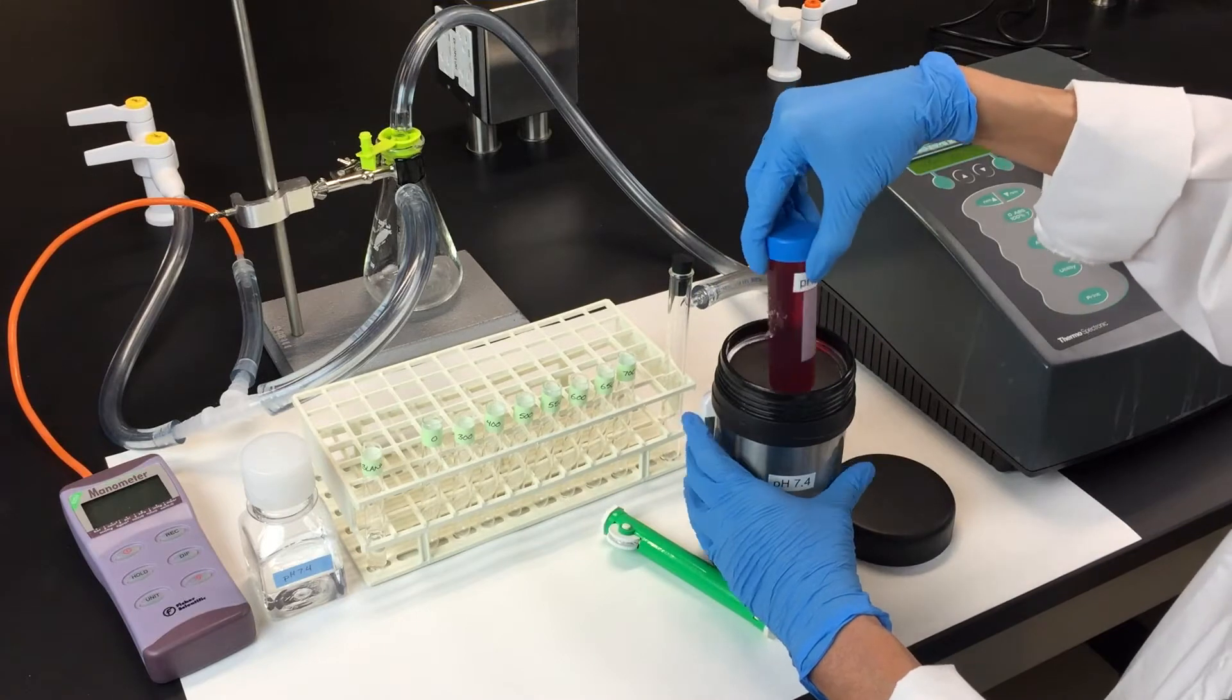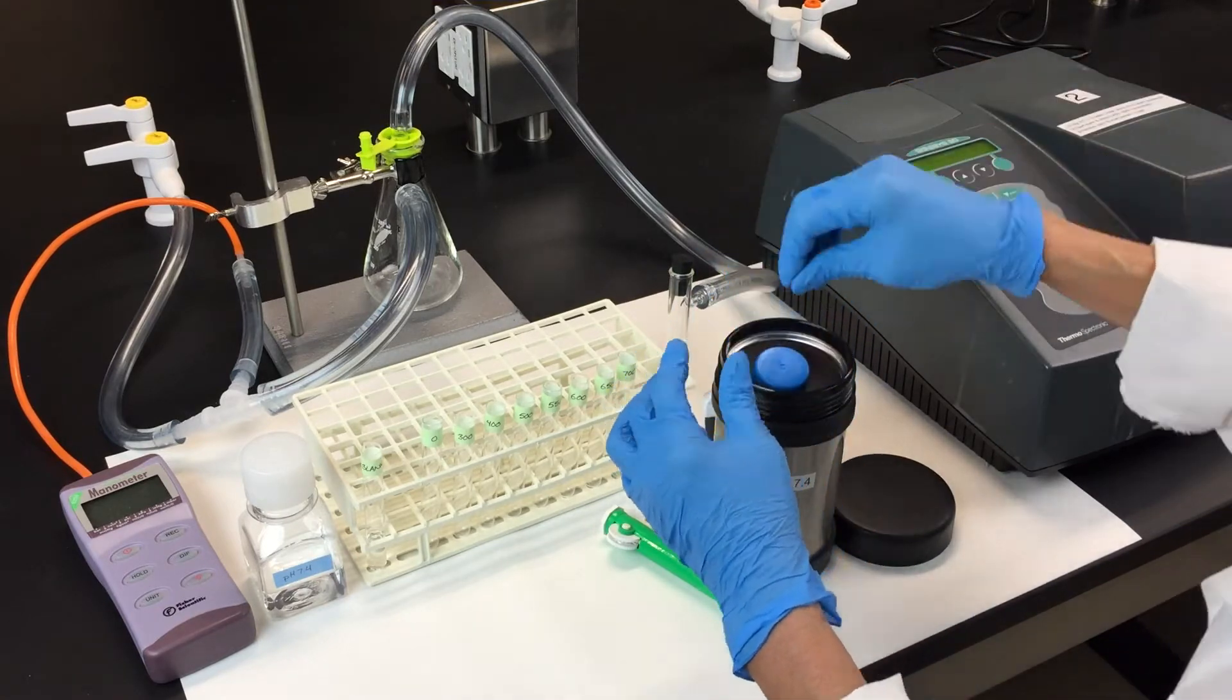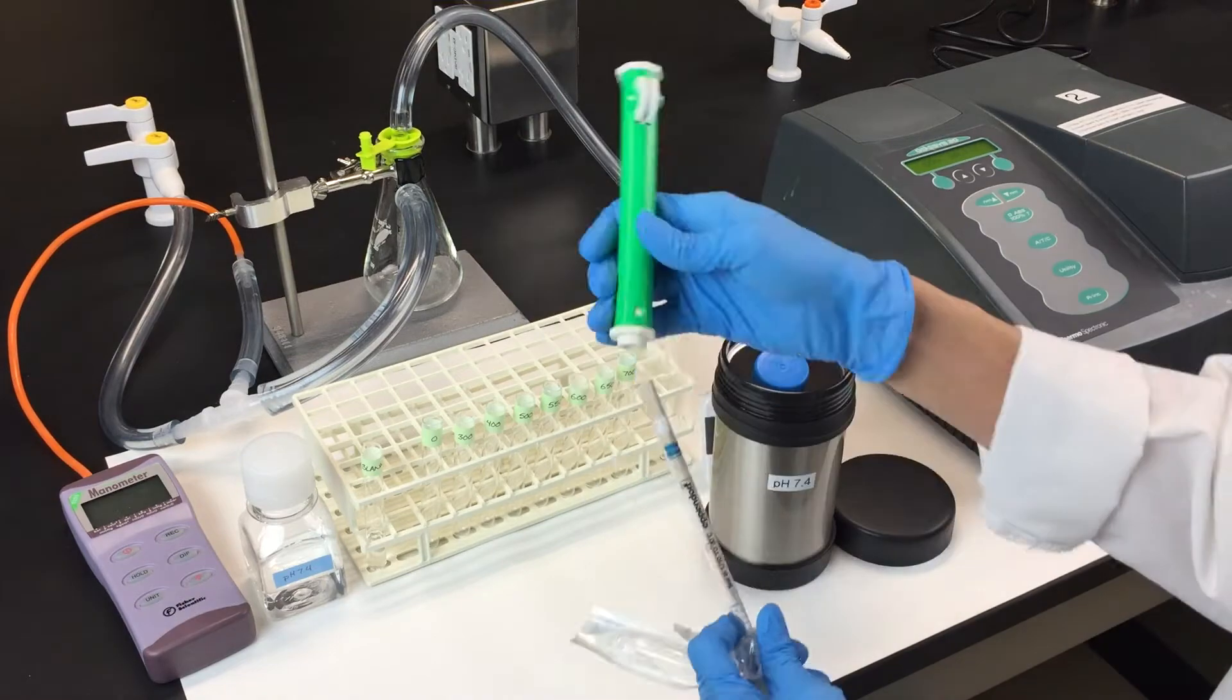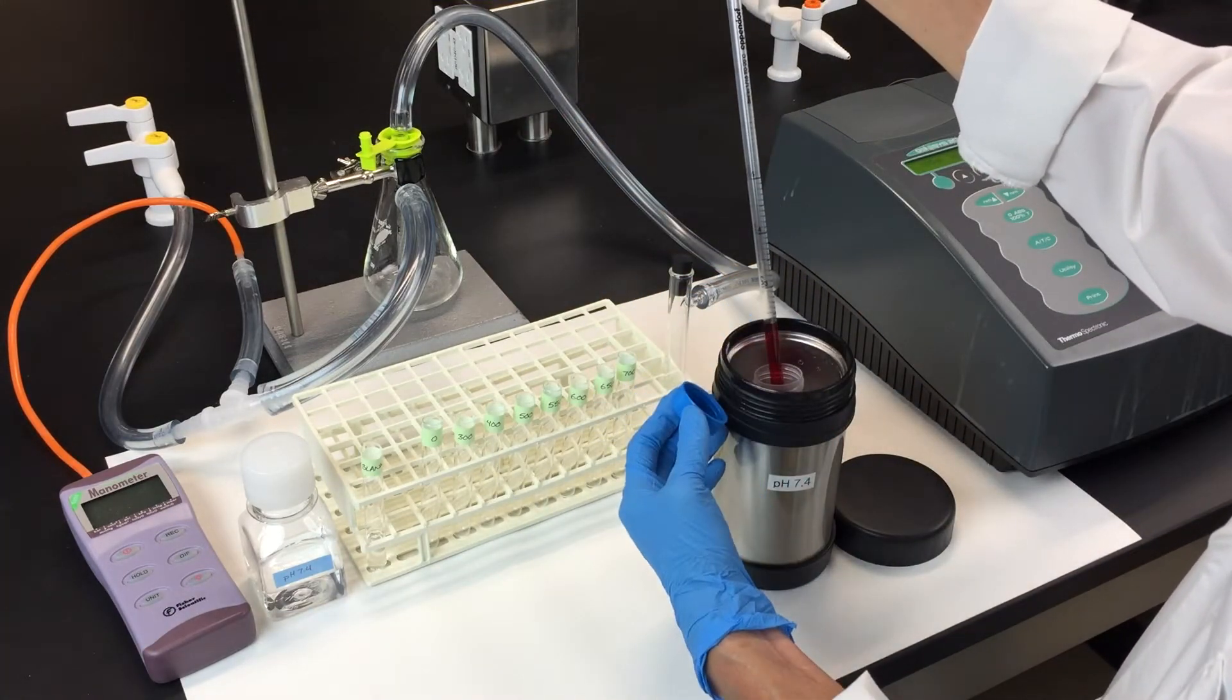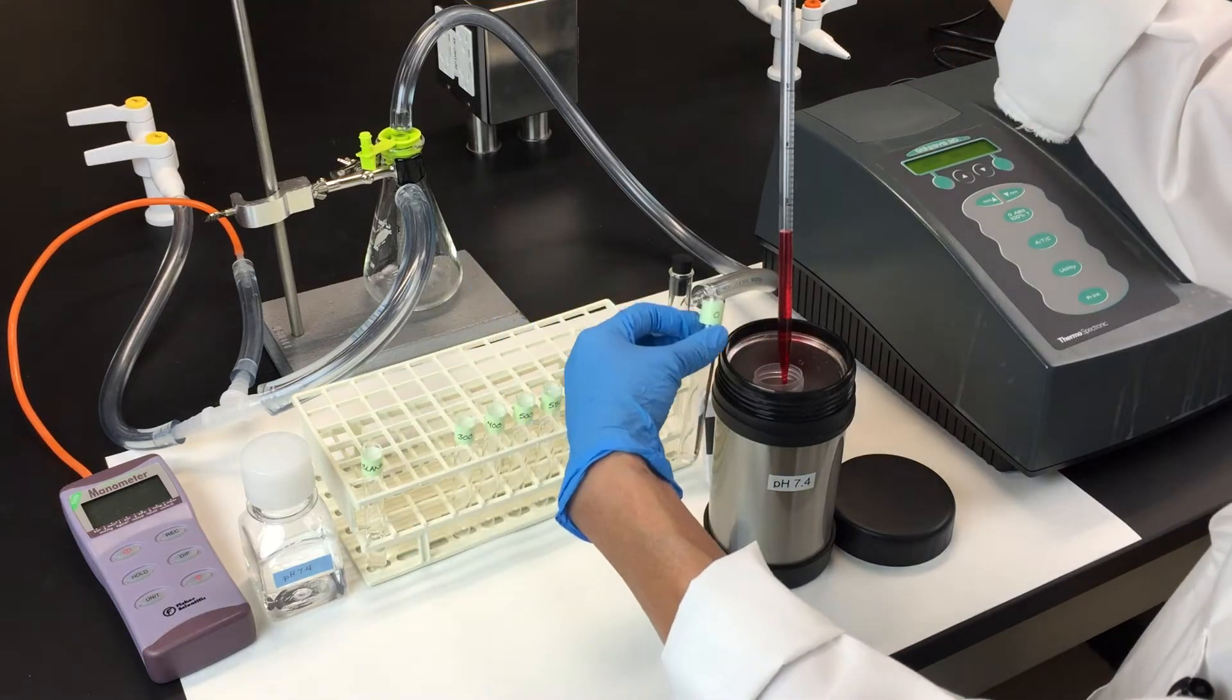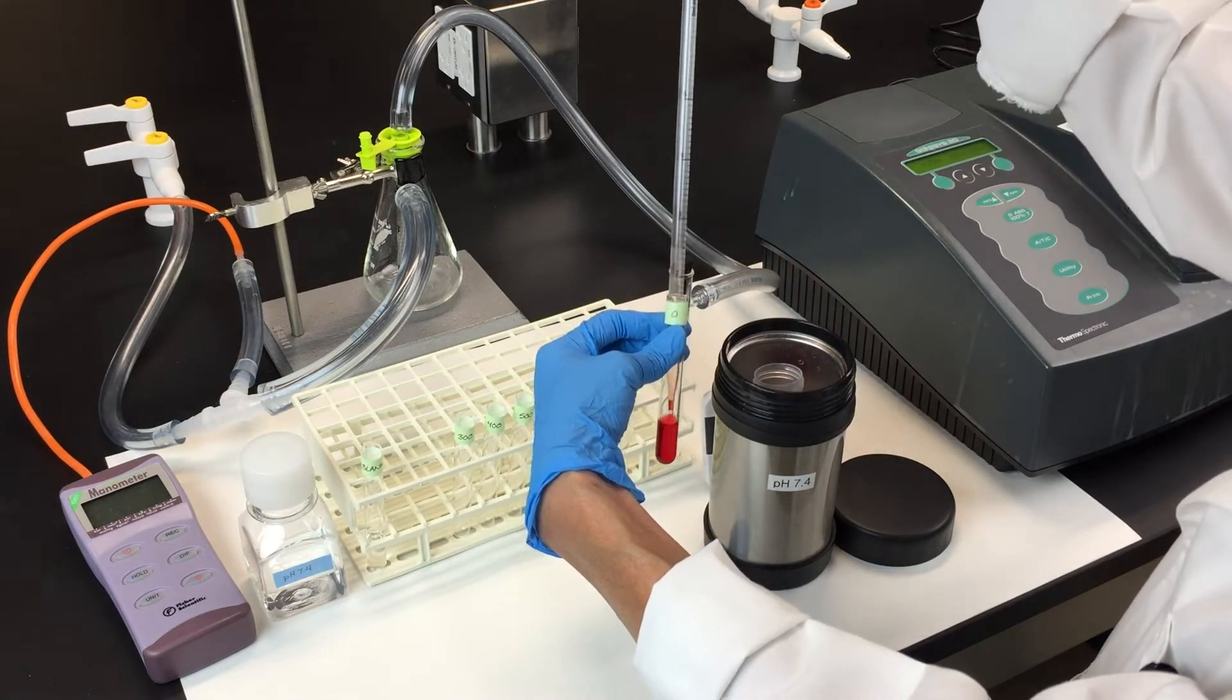Transfer 2.5 milliliters of the hemolysate to the 0 millimeter mercury tube and let it warm up before you place it in the spectrophotometer. This will help prevent any condensation that could collect on the outside of the tube, which could interfere with your readings.